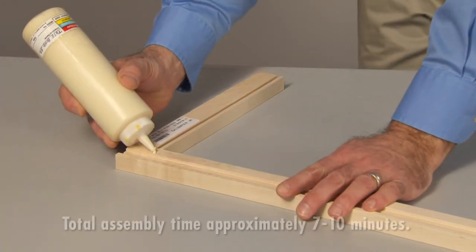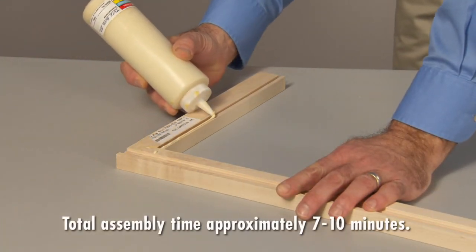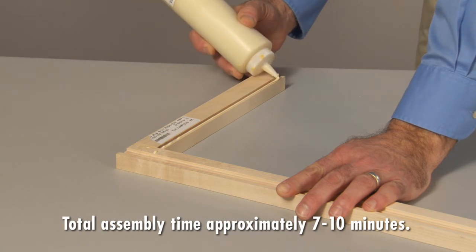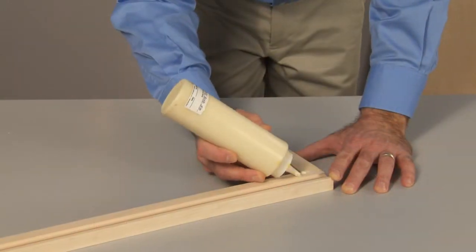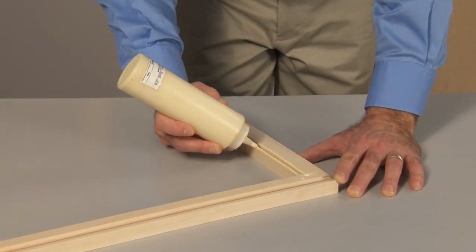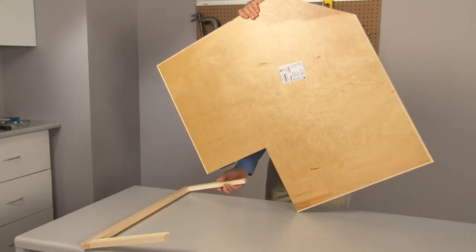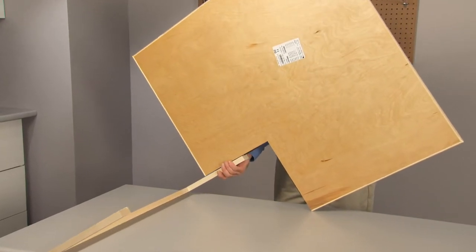Working with the longer piece of the front frame, begin by applying glue to both sides of both of the spline grooves. Attach the front frame to the top of the cabinet.